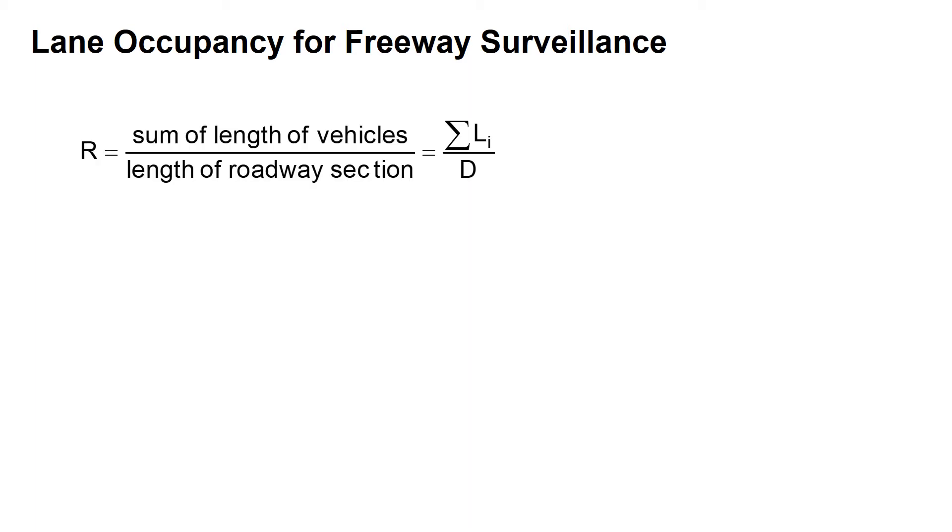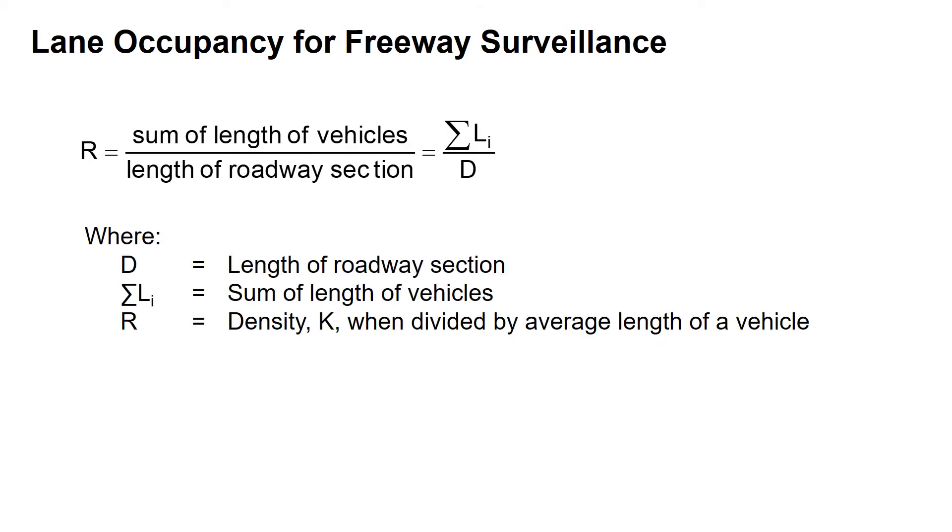This equation looks at lane occupancy for freeway surveillance. The idea is if you're ingesting information about a freeway into your system, what analysis can you do and what understanding can you get? The primary measurement here is R, which we're solving for in this equation. This gives us a density when divided by the average length of a vehicle. The key step is dividing R by the average length of a vehicle to get it in useful form, in terms of the density K.